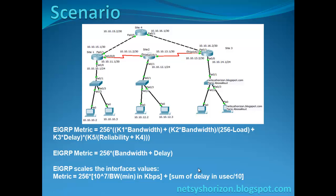Before we begin calculating the EIGRP metric, you should know that each link or interface has its own bandwidth and delay. We want to calculate the EIGRP metric. First, let's choose the path from Site 1 to Site 3 through Site 4. To know the bandwidth and delay of the Fast Ethernet interfaces, use the following command.